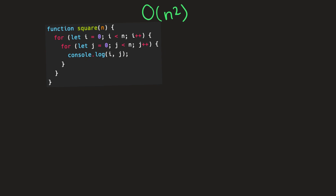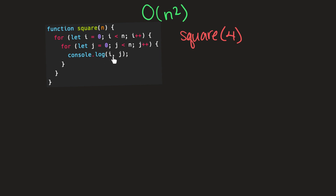If that sounds confusing, just bear with me — I promise it will become clear. So let's say we call the square function with the number four. That means we're going to iterate through the top for loop starting from zero, all the way up until i is no longer less than four. Once i becomes equal to four, we stop. For each iteration of the outer for loop, we loop through the entirety of the nested for loop and draw a square.